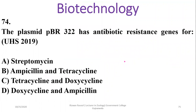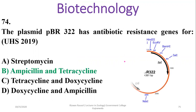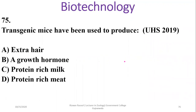Question 73: The plasmid pBR322 has antibiotic resistance genes for both tetracycline and ampicillin — beta is the right option. Question 75: Transgenic mice have been cloned to produce growth hormone according to the textbook — beta is the right option.